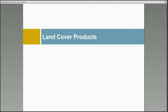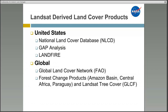Next I will describe land cover products derived from satellite data that you can download. Land cover products for just the US include the National Land Cover Database, Gap Analysis Data, and Land Fire. Global products include the FAO Global Land Cover Network and various forest change products.